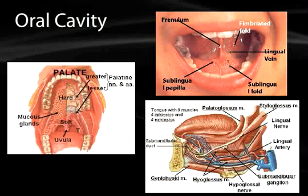It's going to be the greater palatine nerves and arteries going forwards, and going backwards onto the soft palate will be the lesser palatine nerves and arteries. These will meet up with the nasopalatine nerves coming from the nasal cavity through the incisive foramen in the midline of the hard palate.